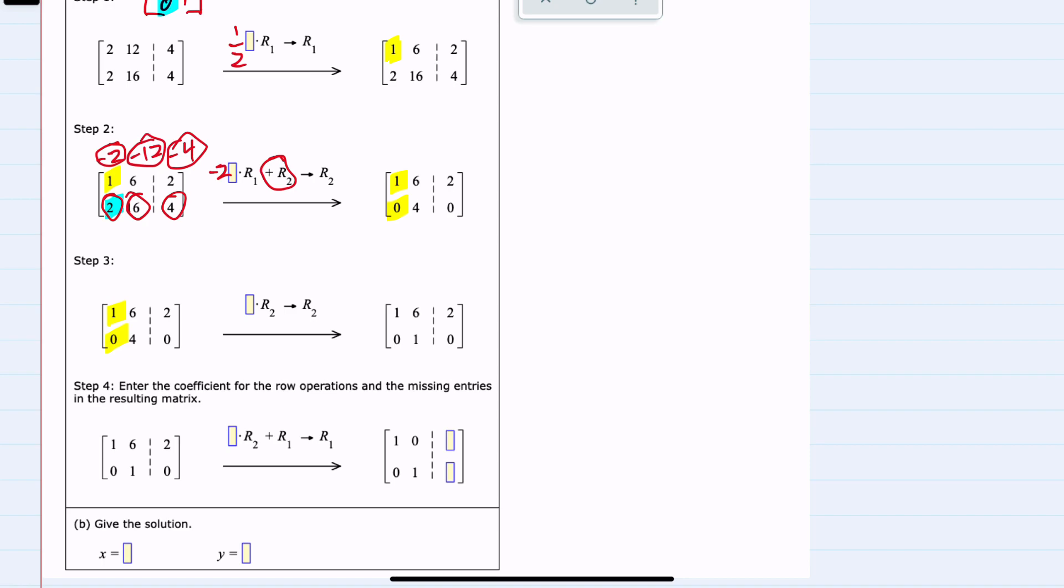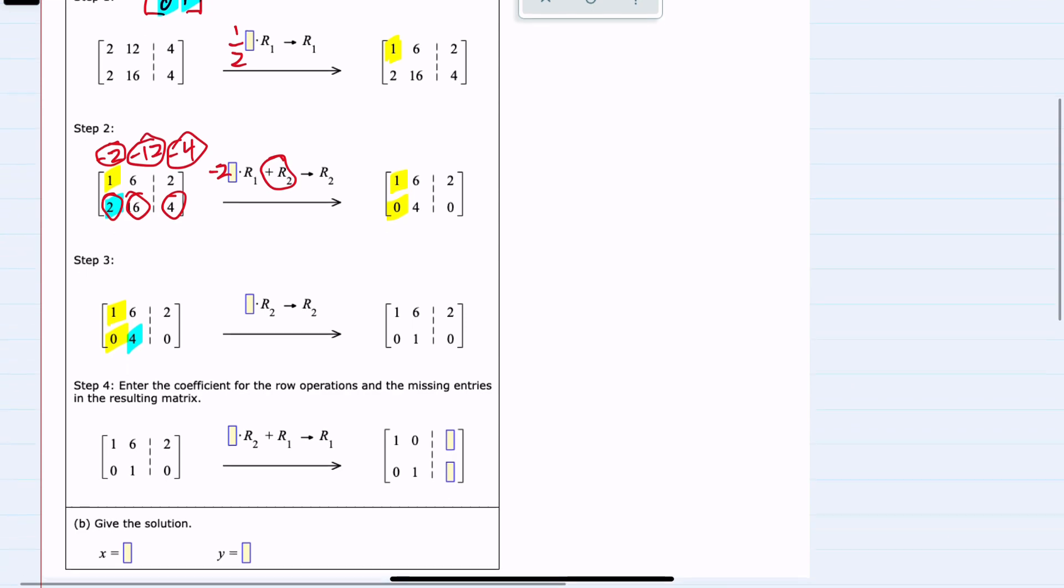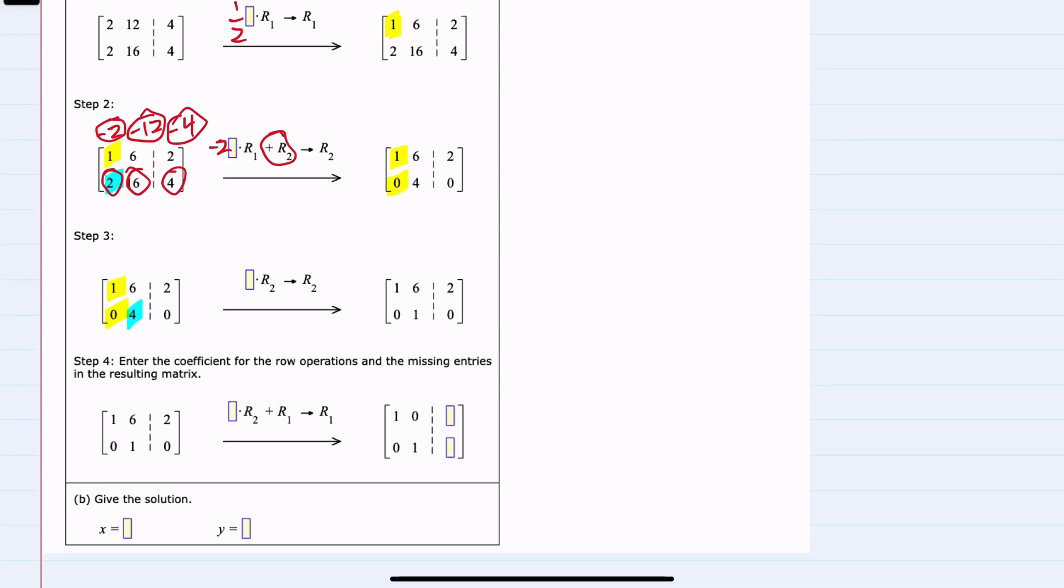Next, we want this second element in that second row to be a one as well. Remember, we're trying to get back to this identity matrix. So to make that four a one, what would I need to multiply by? I would multiply by one fourth.